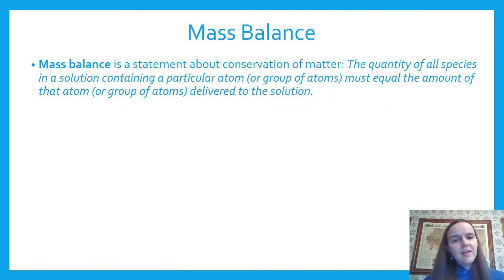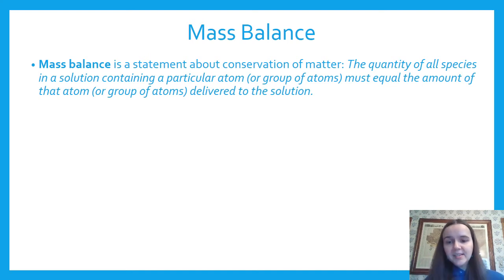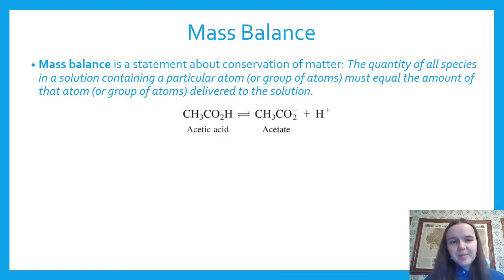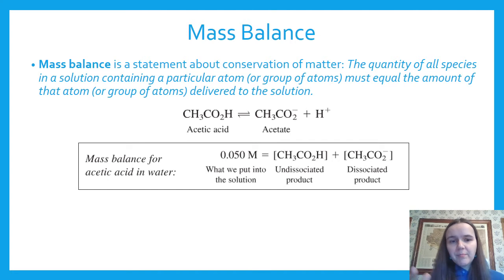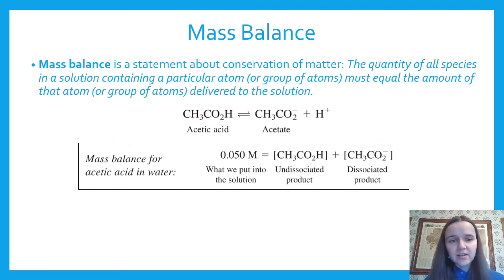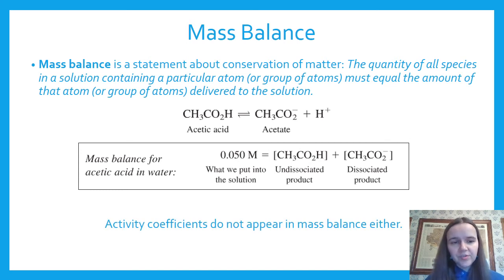Mass balance states that the quantity of all species in solution of a particular atom or group equals the amount you delivered. You put it in, it might speciate, but all the species sum to what you put in. For acetic acid, if you make 0.05 M acetic acid, then [CH₃COOH] + [CH₃COO⁻] = 0.05 M — the undissociated acid plus the dissociated conjugate base. Activity coefficients do not appear in mass balance.